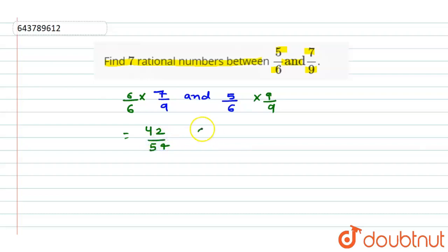And here, 9×5 is 45 and 9×6 is 54. So now let's see, here we have 42/54 and 45/54.